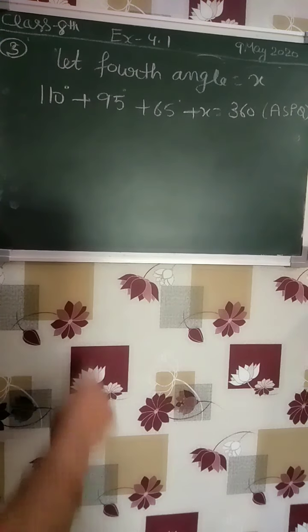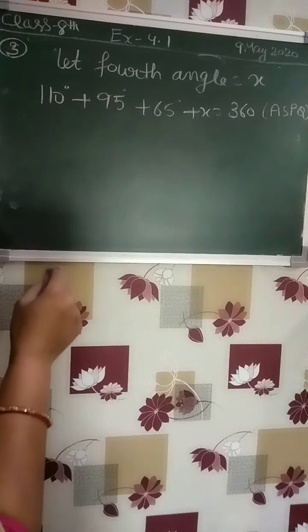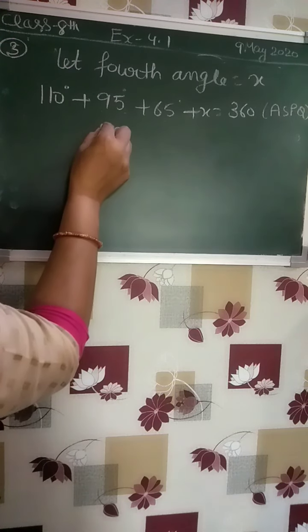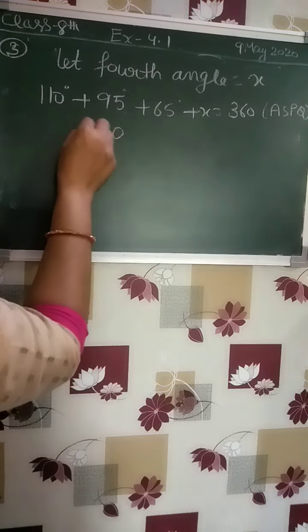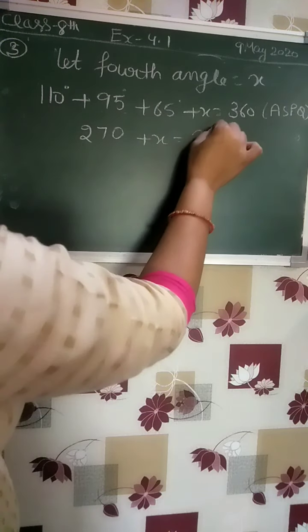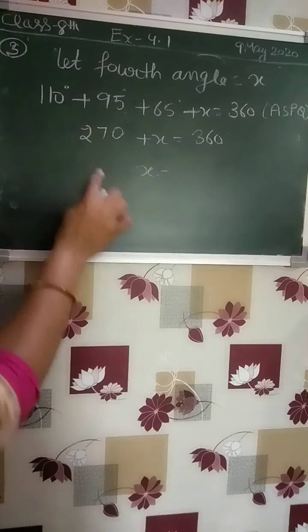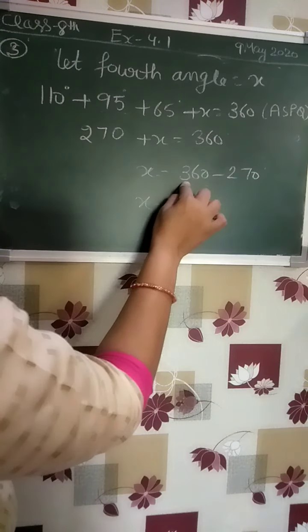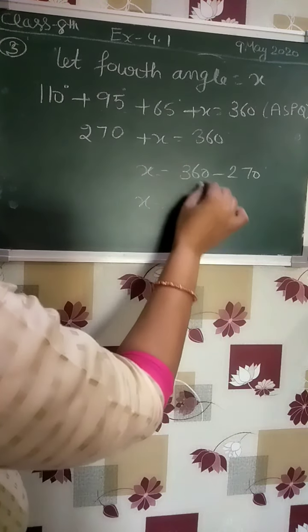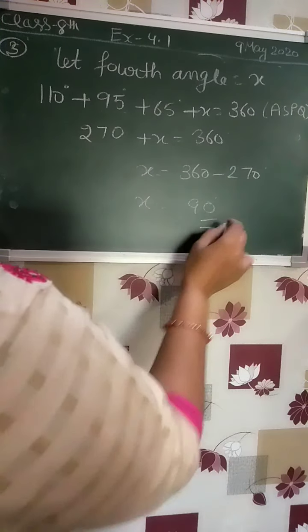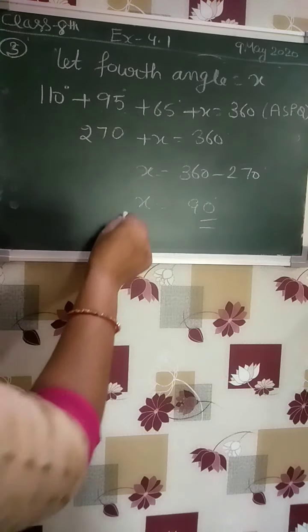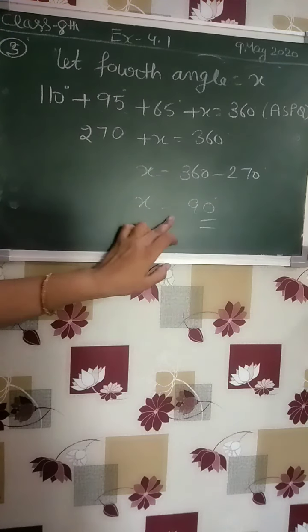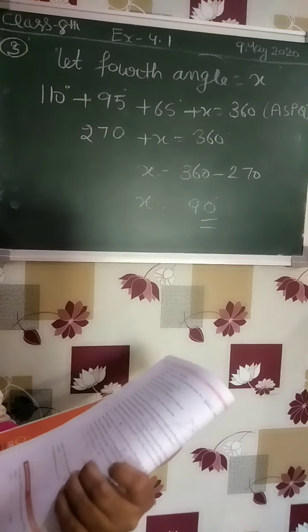Now we add all the numbers: 110 + 95 + 65 = 270. So 270 + x = 360. Taking 270 to the other side, x = 360 − 270 = 90 degrees. So the fourth angle is 90°. You can write either x = 90° or fourth angle = 90°.